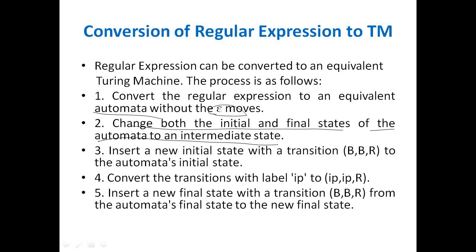The third step is we need to insert a new initial state with transition B, B, R. Here B indicates it is a blank symbol. The blank symbol will be represented as B, R, or a caret symbol — whatever it may be, we can check it.